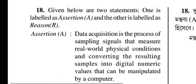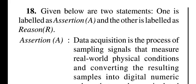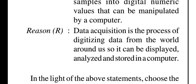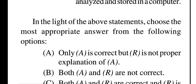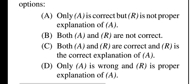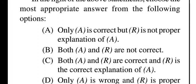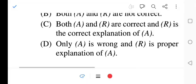Question eighteen is an assertion-reason question. Assertion A: data acquisition is the process of digitizing data from the world around us so it can be displayed, analyzed, and stored in a computer. Reason R is also given. Choose the most appropriate answer. Question eighteen, option C is correct: both A and R are correct and R is the correct explanation of A.